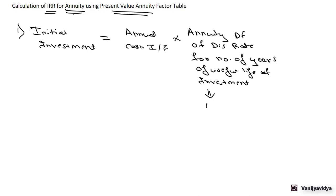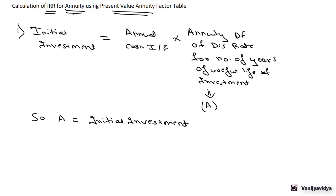This is represented by A, that is the annuity factor. So we can say that A is equal to initial investment divided by annual cash inflow. We calculate this annuity factor A and compare it with the present value annuity factor table. The interest rate corresponding to the project's life is then searched in the table, and accordingly we calculate the IRR.